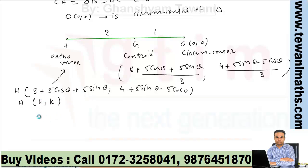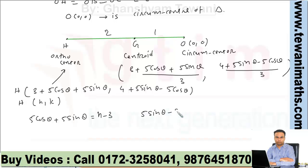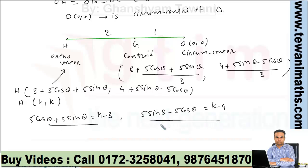Comparing coordinates: 5cosθ + 5sinθ = h - 3, and 5sinθ - 5cosθ = k - 4. Now from these two relations, we eliminate theta. We eliminate it simply by squaring and adding.